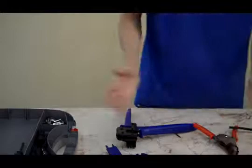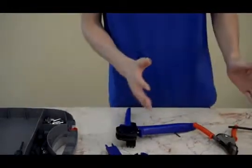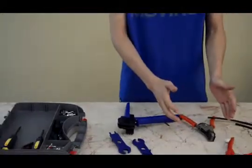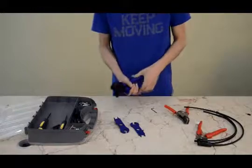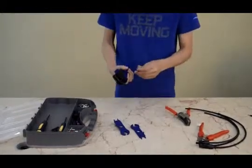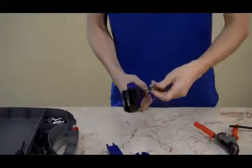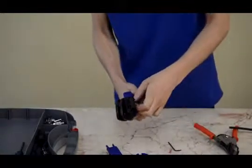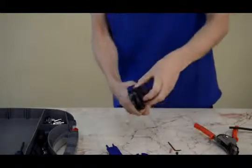This video will introduce how to crimp MC4 solar connectors. Now we will try to use the MC3 solar connectors. Take off the locator because the locator is not suitable for MC3 connectors.